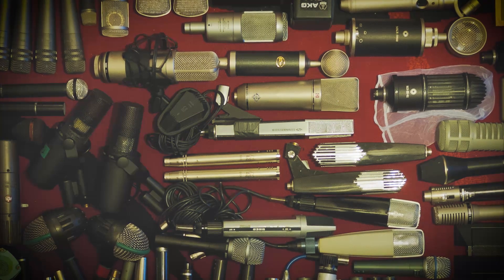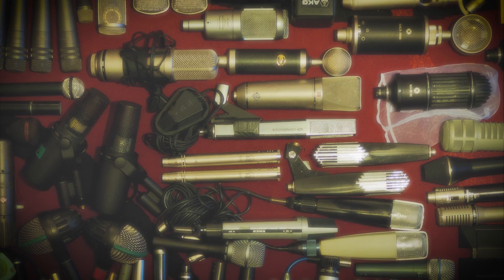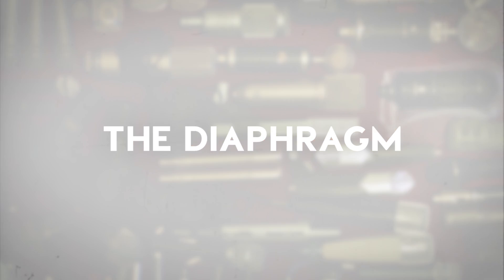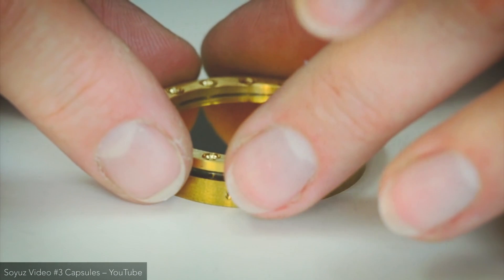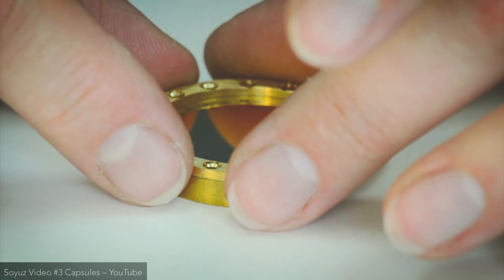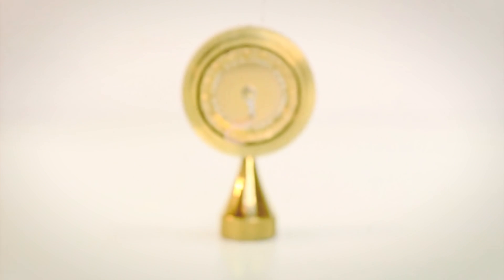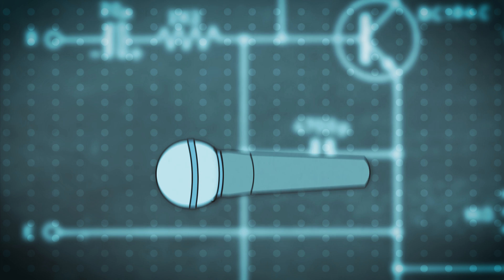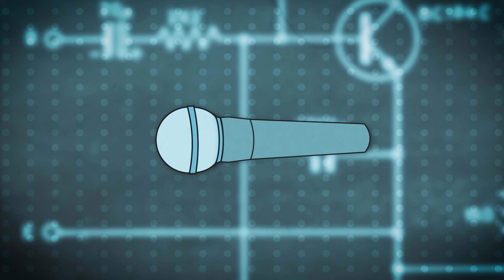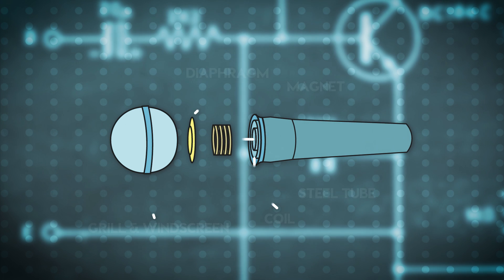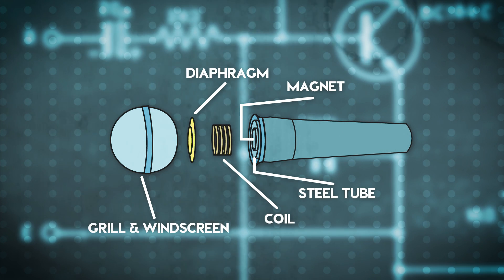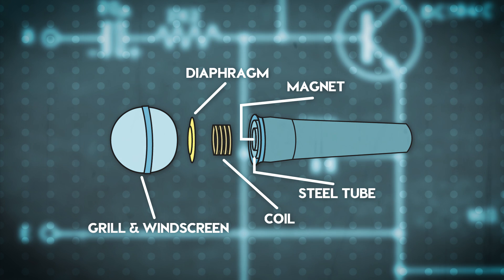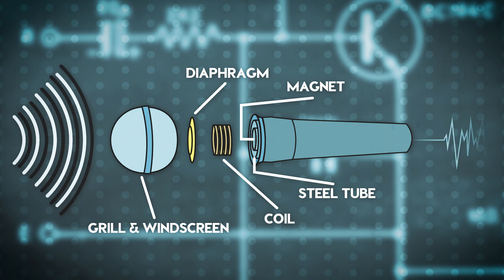Though different mics work in slightly different ways, they all have a diaphragm. The diaphragm is a thin piece of material, often mylar or some form of metal, and often even gold-plated in the case of condensers. When sound strikes the diaphragm, it causes it to vibrate, and this passes energy through the rest of the microphone's components. These vibrations are converted to an electrical current, which becomes the audio signal your interface uses to capture and play back the sound.